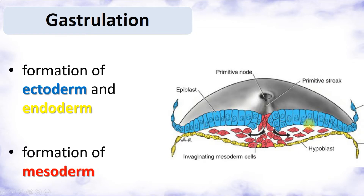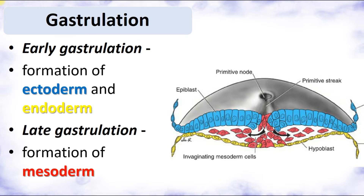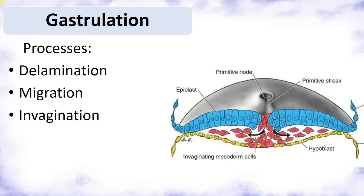We divide gastrulation into two stages: early gastrulation and late gastrulation. Early gastrulation includes formation of ectoderm and endoderm — they develop first. Then, after development of the outer and inner layers, there is development of the middle embryonic layer, mesoderm, which is called late gastrulation. Now we will talk mainly about early gastrulation.